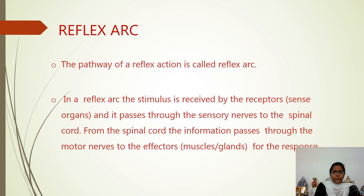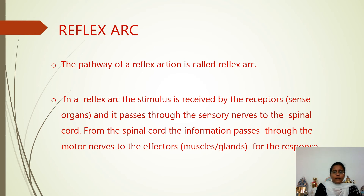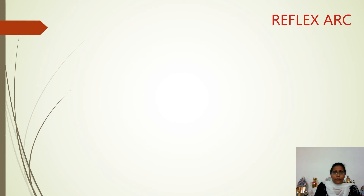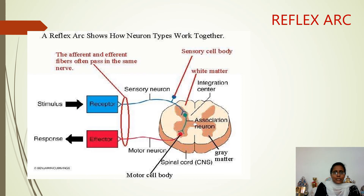The pathway of a reflex action is called the reflex arc. In a reflex arc, the stimulus is received by the receptors and passes through the sensory nerves to the spinal cord. From the spinal cord, the information passes through the motor nerves to the effectors for the response. Here you can see: the stimulus is taken up by the receptor, the impulse is carried by the sensory neuron, then to the association neuron which interprets the information, then carried by the motor neuron to the effector, creating a response. This total pathway is called the reflex arc. Afferent fibers are sensory neurons and efferent fibers are motor neurons.